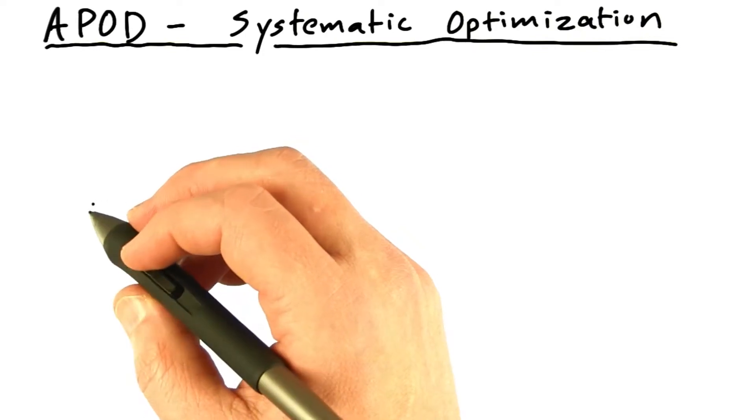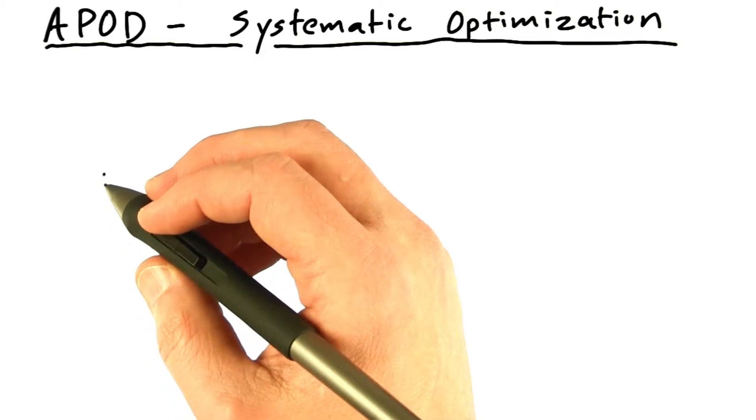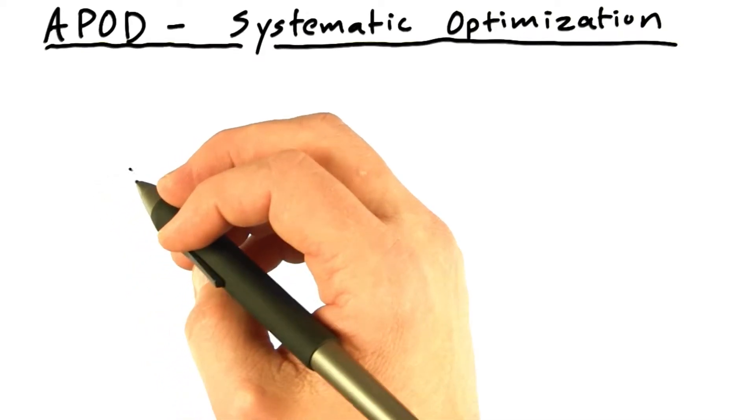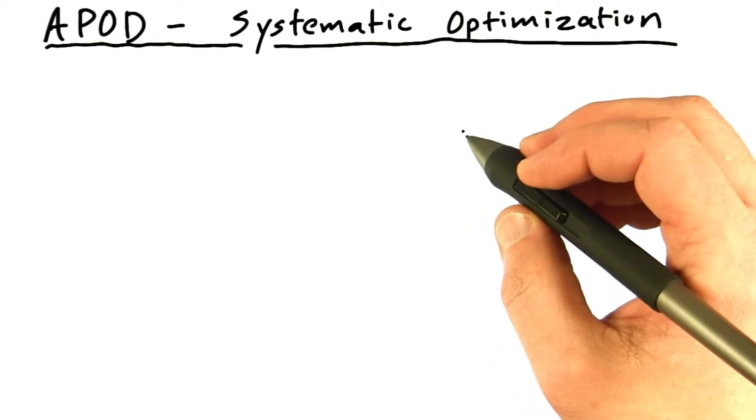You can find entire books, entire courses on how to go about analyzing and optimizing code. The real point is simply that you should have a systematic optimization process.